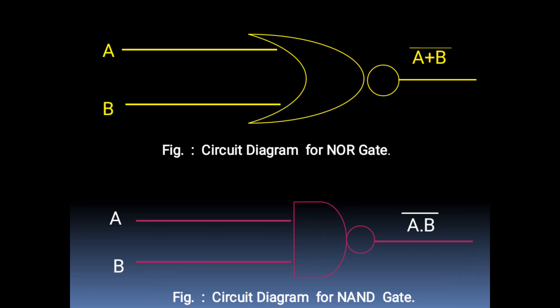These are the circuit diagrams for NOR gate and NAND gate. In the circuit diagram of NOR gate we can see the OR gate shape combined with the ball symbol from the NOT gate.